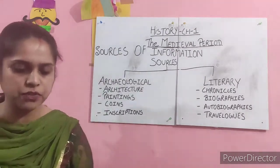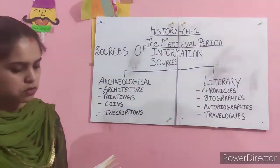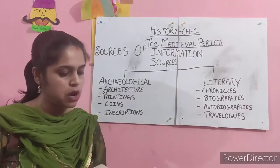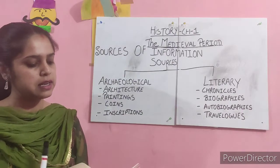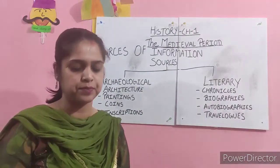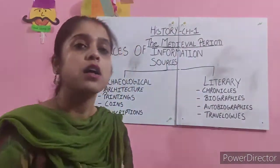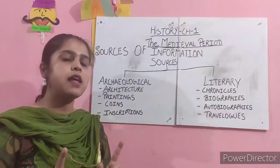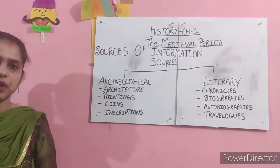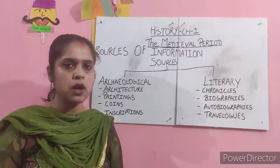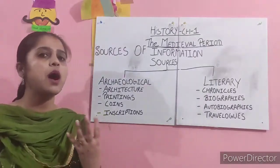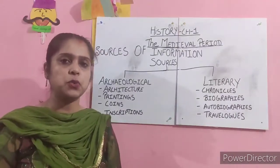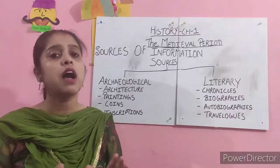Let me address those queries first. The first question I received was from a student who did not understand how political stability led to an increase in trade. In video number 2, I told you that with the coming of the Mughals, when they provided political stability, it led to an increase in trade. The question is, how?